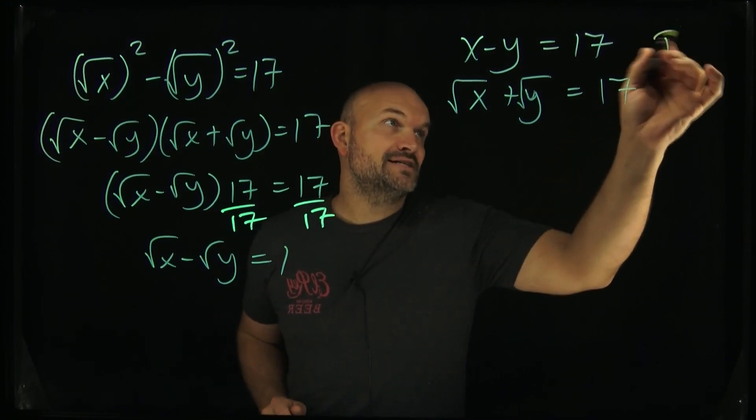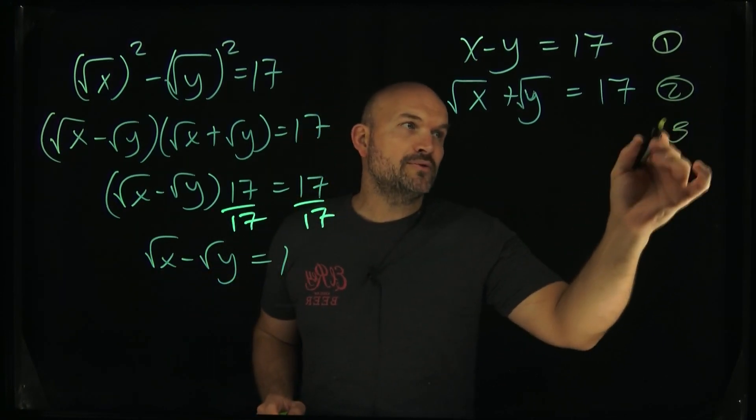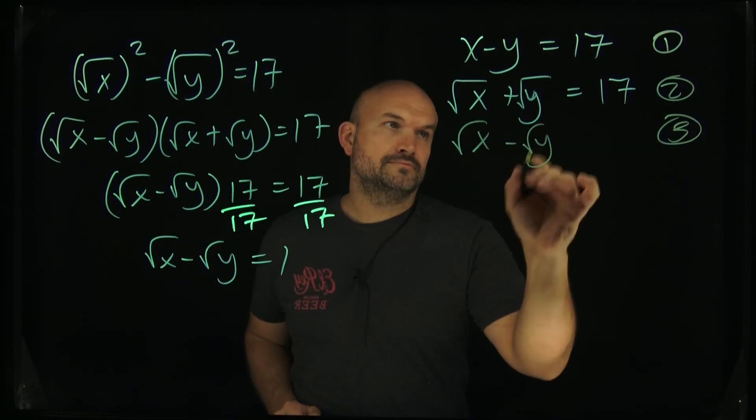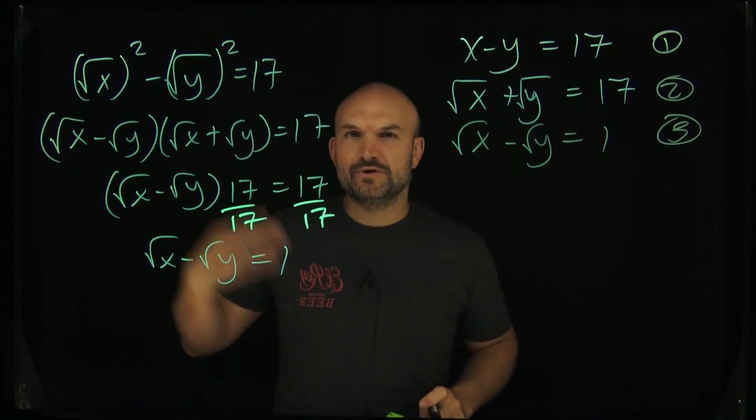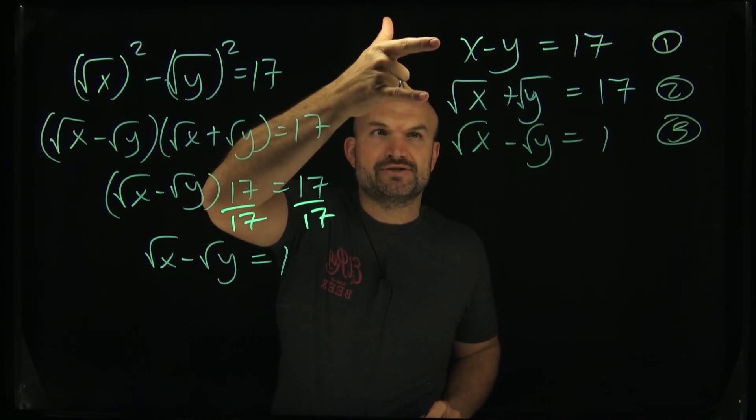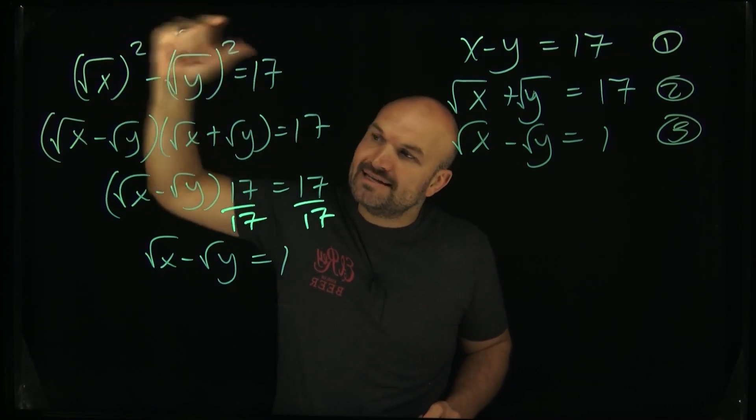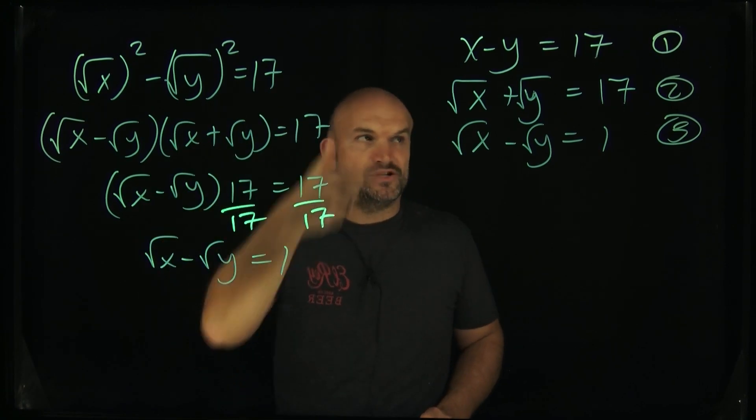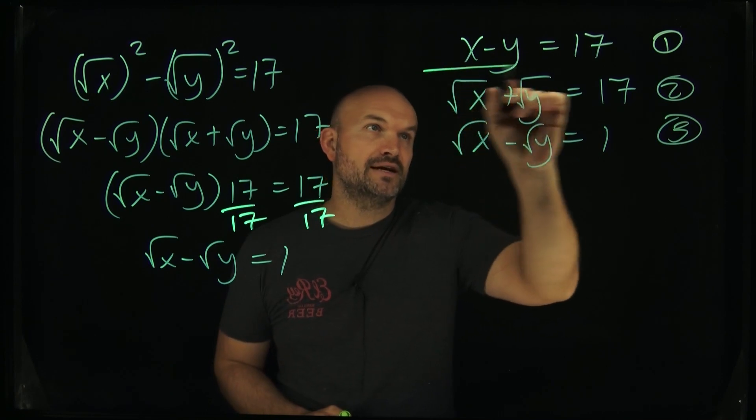So I took equation number 1 and was able to manipulate it as √x - √y equals 1. That's equation 2. Now what I have done is created equation number 3, which is basically equation number 1 manipulated. Remember a lot of times we're doing elimination—we couldn't do anything because they weren't in the same form. That's why we had to manipulate equation number 1 so it was in the same form as equation number 2.